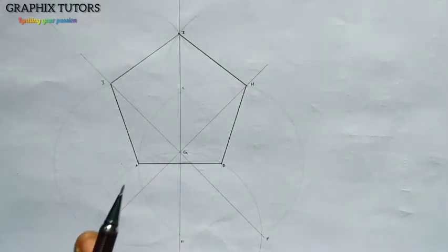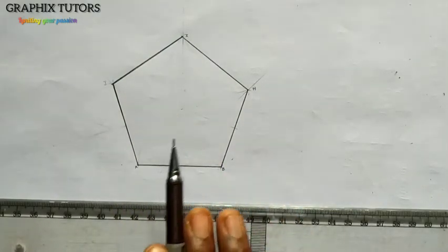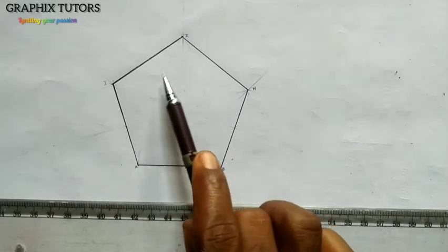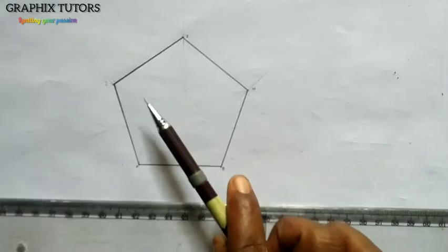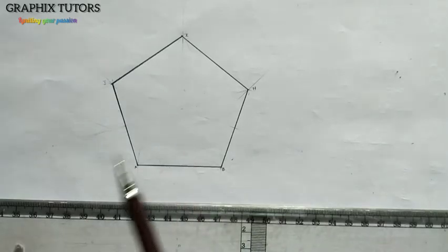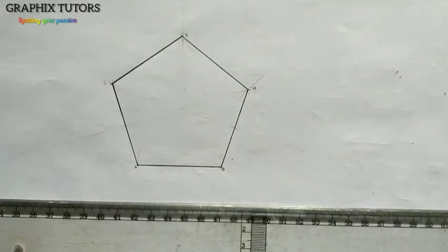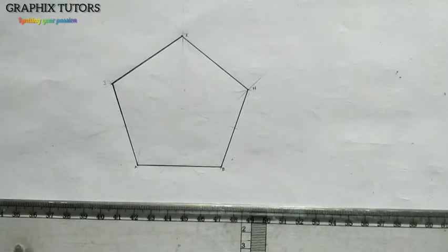Now let's take this as a case study and see how many triangles we have here. I have cleaned all the construction lines so you can see clearly what I am trying to do. First of all, I need to get the center of this polygon. I am going to bisect any two of the five sides to get the center of this polygon.